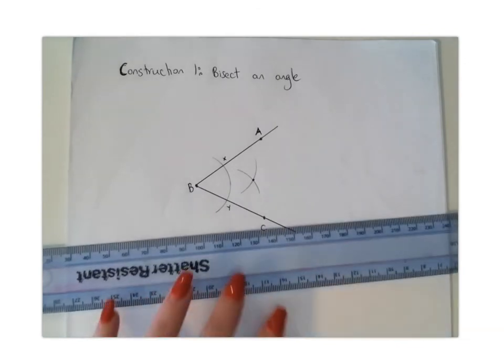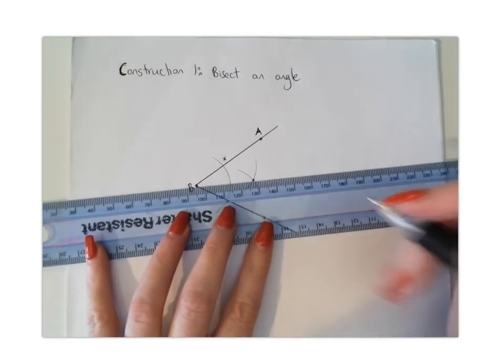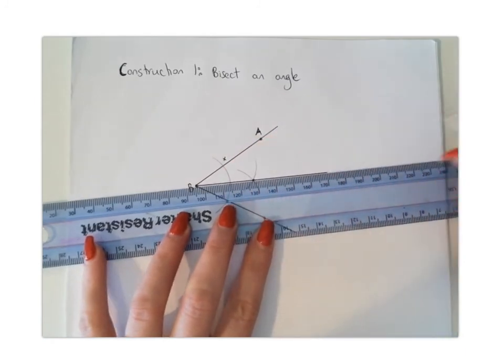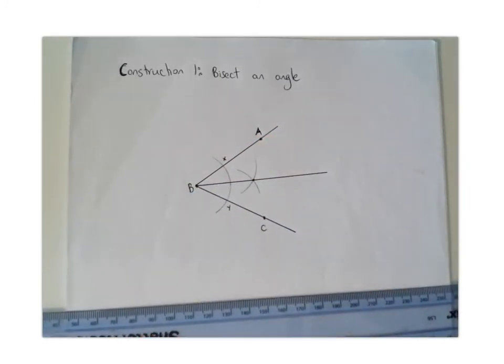With your straight edge or with your ruler, you're going to connect up those two points. You're going to join them together and that is construction number one complete, where we have bisected our angle A, B, C.